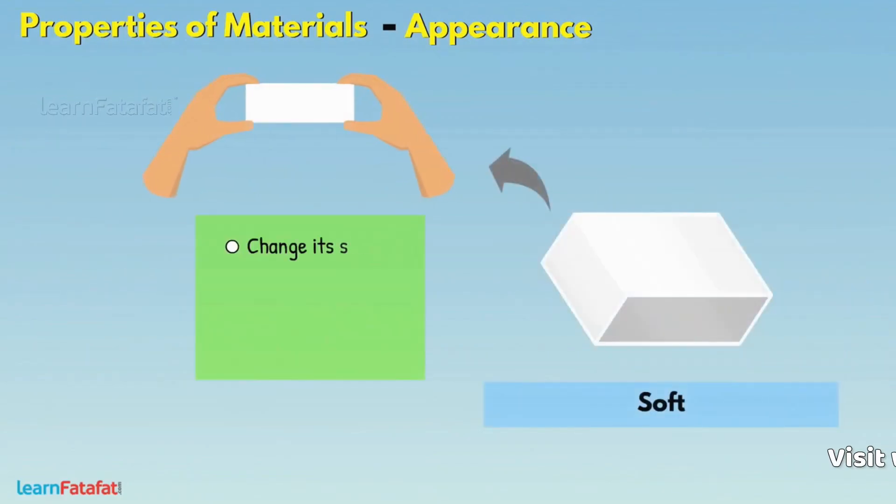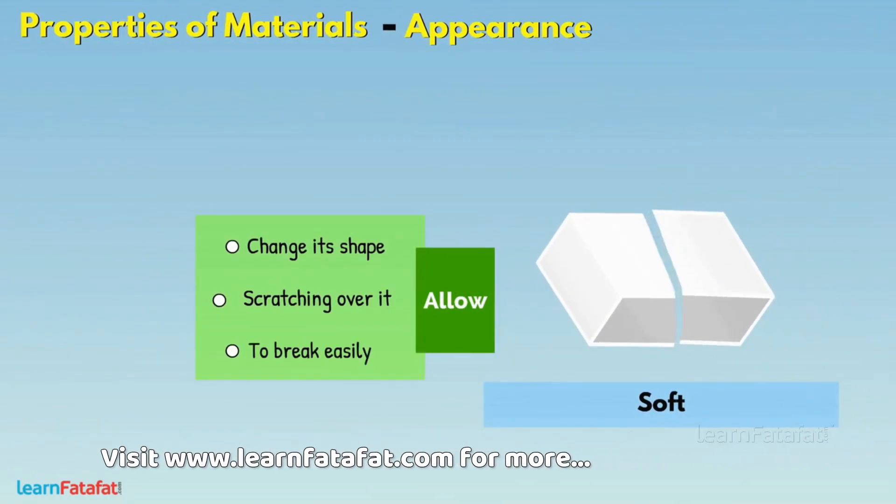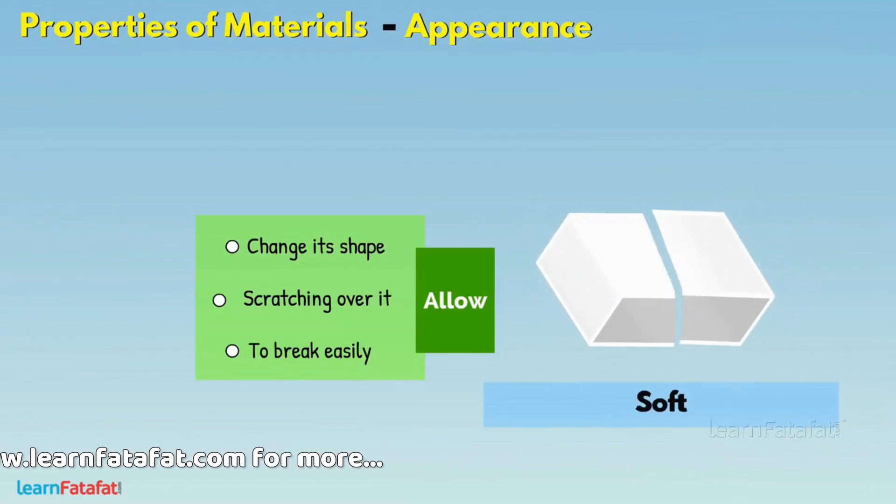If a material changes its shape, allows scratching over it, or breaks easily, then such material is soft material.